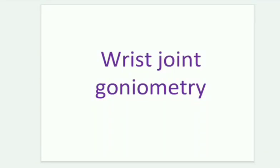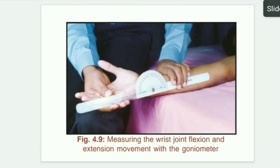Hello physios, today we learn about goniometry in the wrist joint. First, the wrist actions are flexion, extension, radial and ulnar deviations. For wrist flexion, the range is